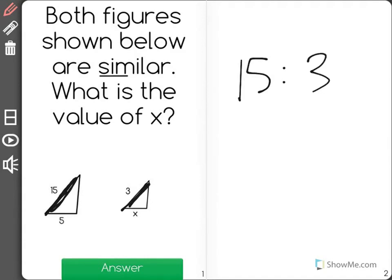And if we simplify this we could see that both of those are divisible by 3. There's actually a ratio of 5 to 1. So for every 5 on this bigger triangle there will be one unit on the other.